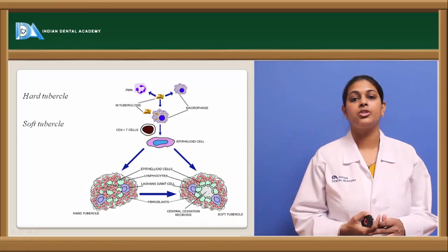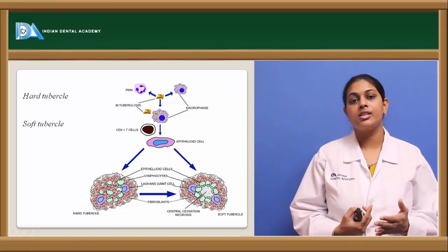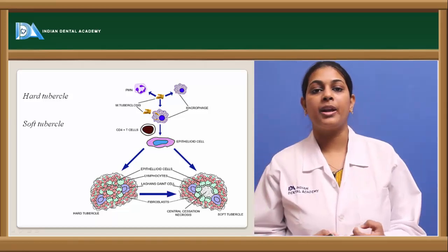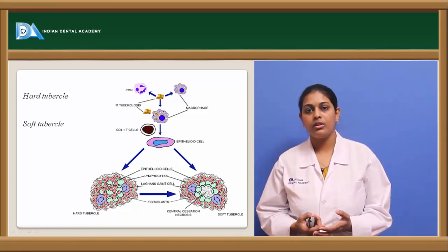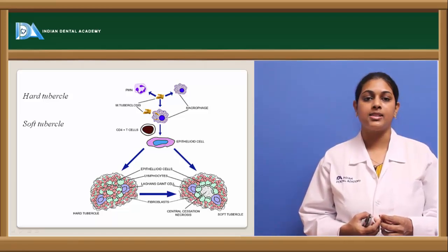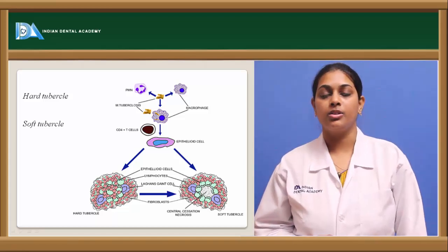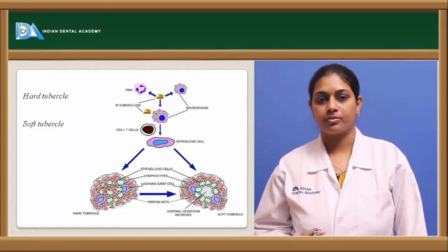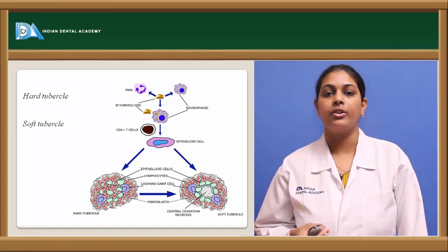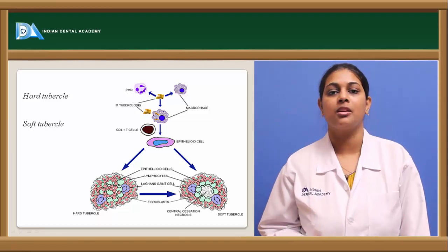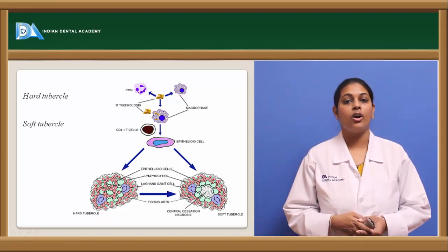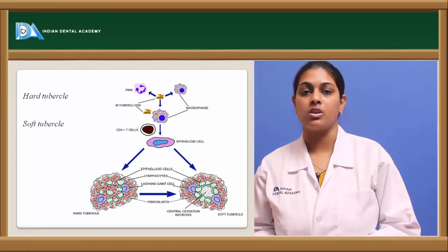Coming to the hard tubercle and soft tubercle: within initial stages, once a granuloma is formed, we see that centrally placed epithelioid cells and macrophages are peripherally covered with infiltrating cells — lymphocytes, plasma cells. This is the hard tubercle, so called because there is an absence of caseation necrosis. The granuloma shows centrally placed granulation tissue, structureless, and peripherally with lymphocytes, plasma cells, neutrophils, and other inflammatory infiltrating cells.